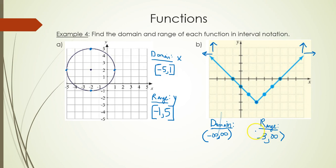Parenthesis around infinity, bracket around -3 because there is a point at the y value of -3. So that's finding the domain and range of graphs, one of which was a function and one of which was not.